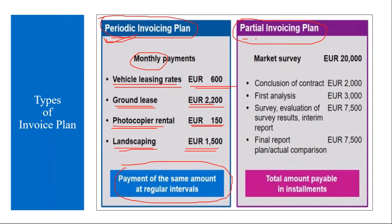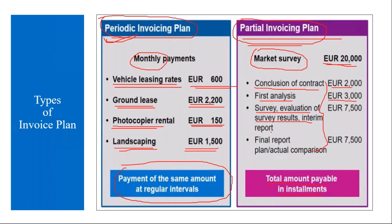The next type is the partial invoicing plan. Here you basically pay the total amount in installments. For example, say you are going to conduct a market survey with a total value of 20,000 euros. You divide this into phases: first on conclusion of contract you pay an amount, then after the initial analysis you pay another amount, then after the survey and evaluation of results and the interim report you pay another portion, and after the final report you pay the remaining balance. You are paying the amount in installments — this is called the partial invoicing plan.